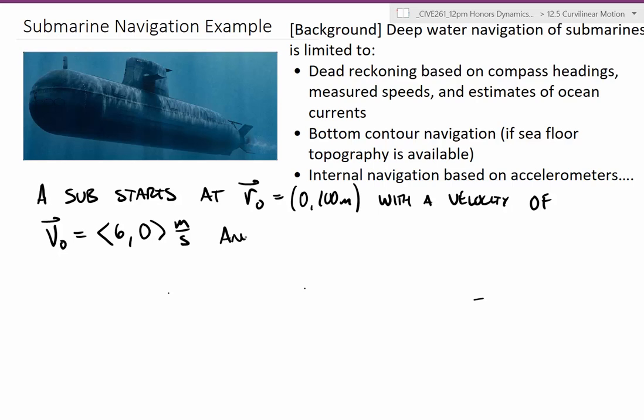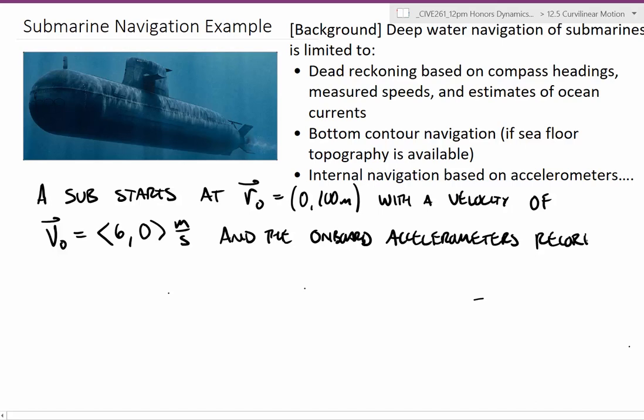And the onboard accelerometers record two different functions. One's going to be the acceleration in the x-direction, one's going to be the acceleration in the y-direction. So acceleration in the x is equal to 0.6 times time, where that t is time in seconds.